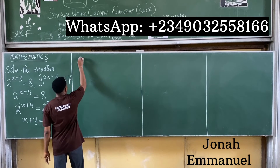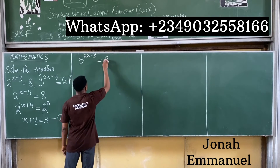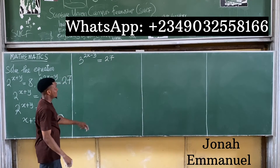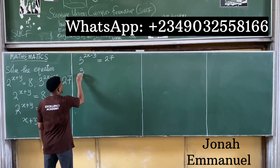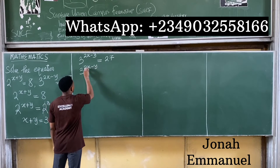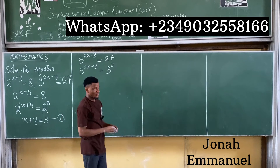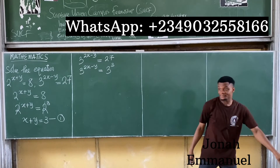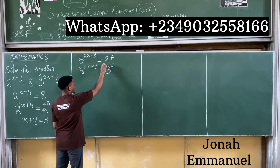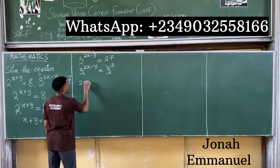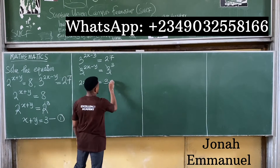From the second equation: 3 to the power 2x minus y is equal to 27. Express 27 in terms of base 3: that becomes 3 to the power 2x minus y is equal to 27, which is 3 to the power 3. The bases cancel, so 2x minus y is equal to 3. Call this equation 2.